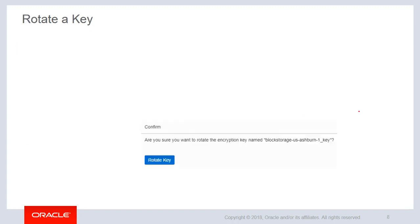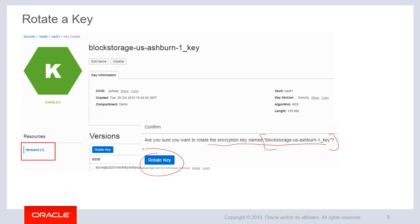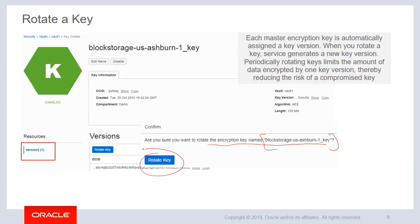Now you can also rotate keys. When you do that, the first thing it says is: are you sure you want to rotate the encryption key? So I have this key which I just created and I want to rotate that key. I click on rotate keys and then it creates another version of that key. Each master encryption key is automatically assigned a key version. When you rotate a key, the service generates a new key version. Periodically rotating keys limits the amount of data encrypted by any one key version. The advantage here is you reduce the risk of a compromised key. So it's a best practice to keep rotating your keys over a specific period of time.